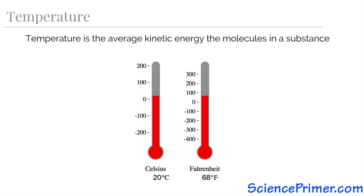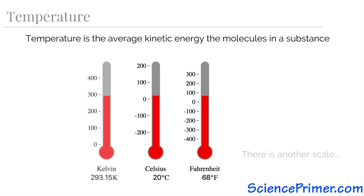Water doesn't necessarily freeze or boil at these temperatures anywhere else. The other common scale is Fahrenheit, where water freezes at 32 degrees and boils at 212. There is another important scale: the Kelvin scale, which is the formal metric scale for temperature. Kelvin differs from the other two in that it is not an arbitrary scale — it is an absolute scale. Zero on this scale has meaning: zero Kelvin is the point of minimal internal kinetic energy. At zero Kelvin, objects have no internal kinetic energy and therefore no molecular motion. The fact that this is not an arbitrary scale is indicated by the fact that we do not use the label 'degrees' when discussing temperatures on this scale.